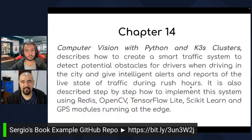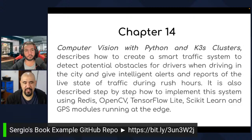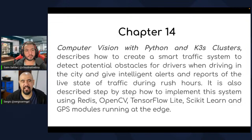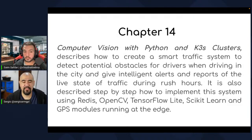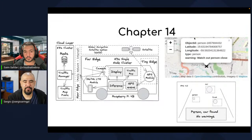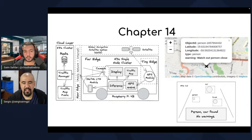Chapter fourteen is about computer vision using a camera and Kubernetes. This chapter is focused on video analysis and object detection using K3S and a small neural network accelerator — in this case Google's Coral, though you can also use Intel neural network accelerators. I use Redis, OpenCV, TensorFlow Lite, scikit-learn, and a GPS module. The system detects persons, trucks, cars, and different objects, giving warnings to the driver about what the camera is capturing and detecting.